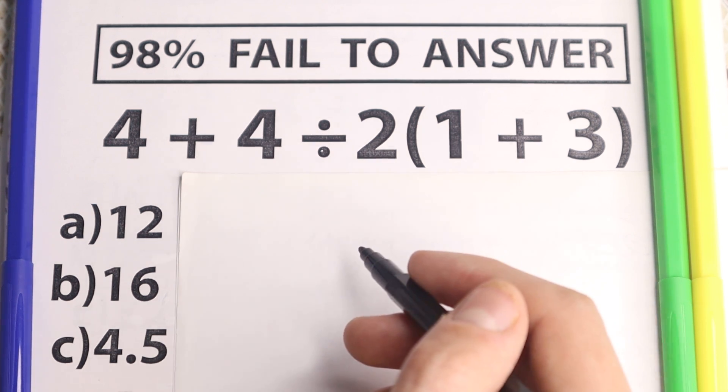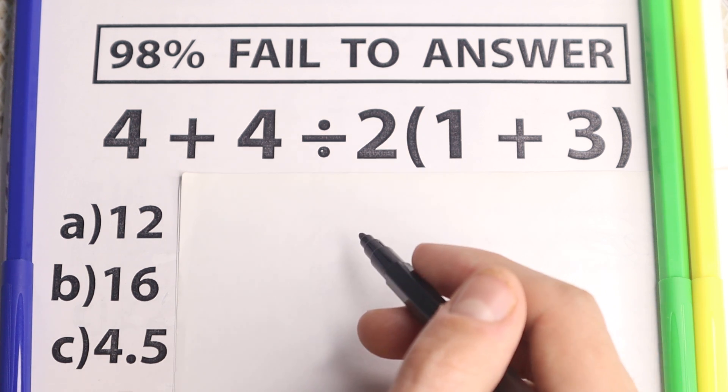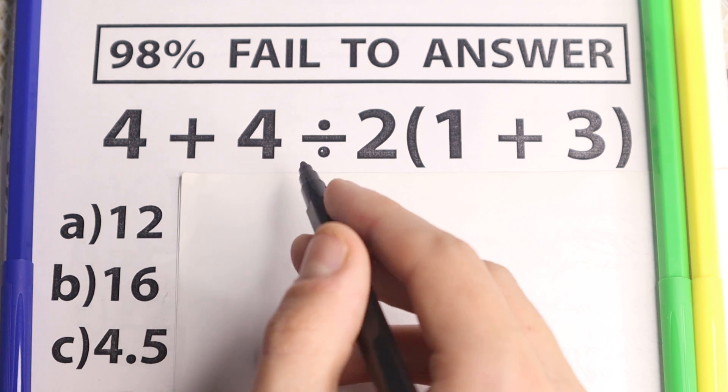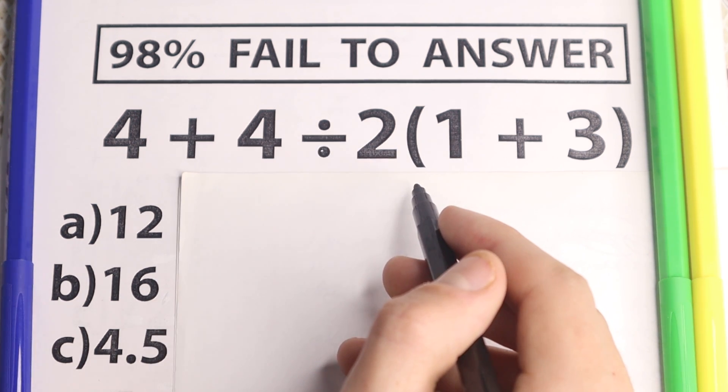I'm going to show you the correct answer here in just one minute, and we will check our answer, it will be really interesting to check our answer in the end of the video. OK, so here is our problem. 4 plus 4 divided by 2 and in parentheses, 1 plus 3.